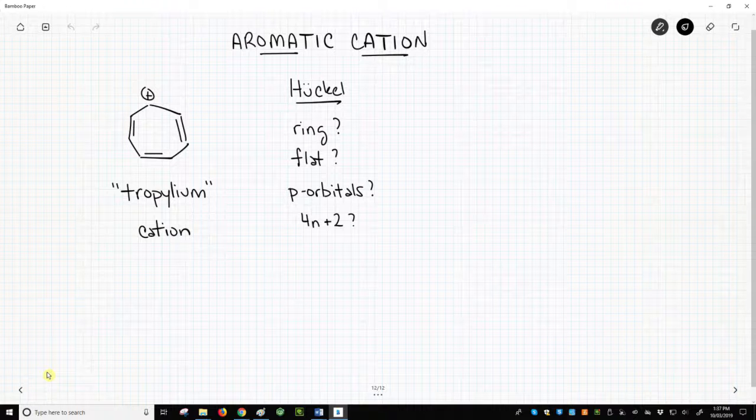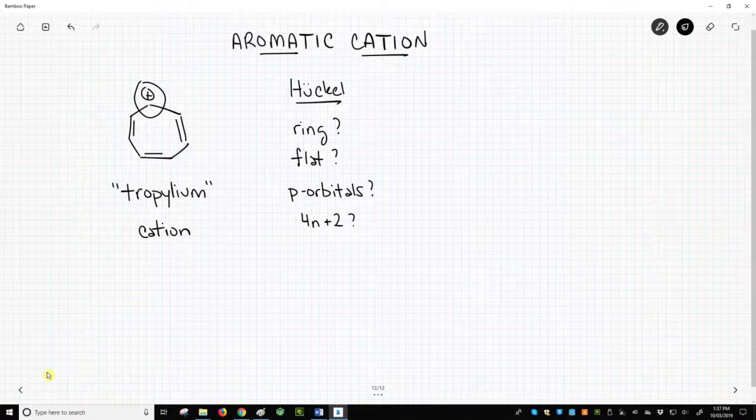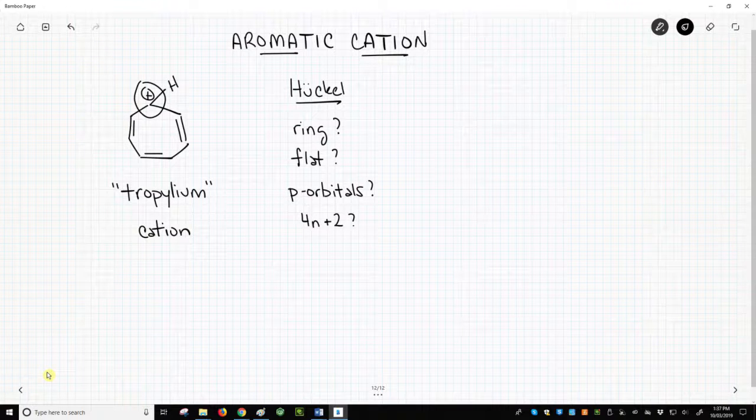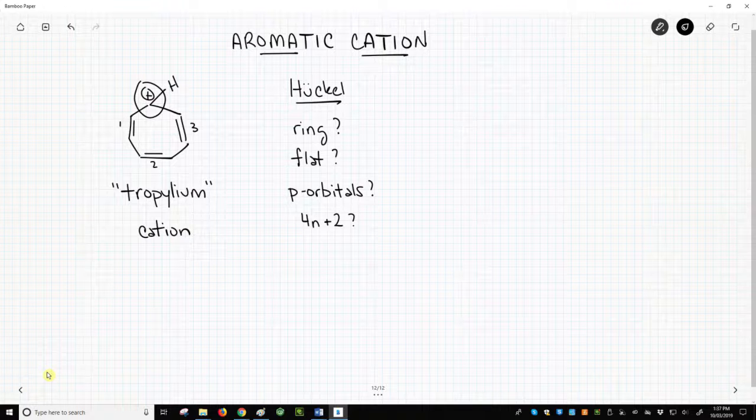By the Huckel criteria, it is a flat ring. Each atom could be sp2 hybridized. This carbon at the top has three bonds, so it can be sp2 hybridized with a p orbital. Of course, that p orbital will be empty, so we'll have a carbocation. We have three carbon-carbon pi bonds and an empty p orbital. That's 6 electrons. N equals 1.